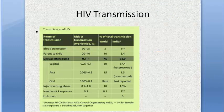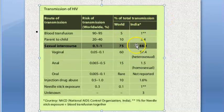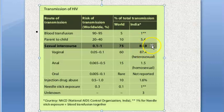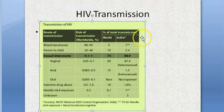In India specifically, 88.9% of total HIV transmission is through sexual intercourse, predominantly heterosexual vaginal sex. The second most common route in India is parent-to-child transmission. Unknown routes are surprisingly higher in India than expected.